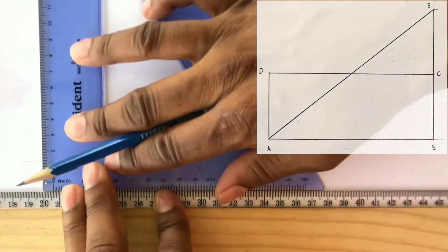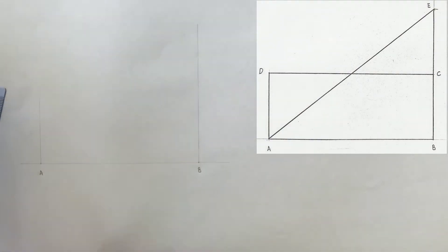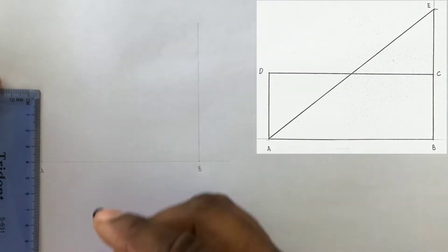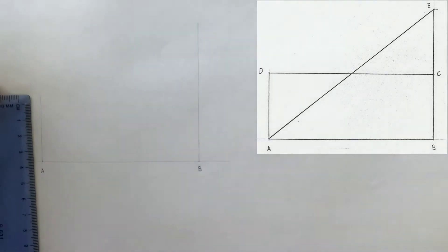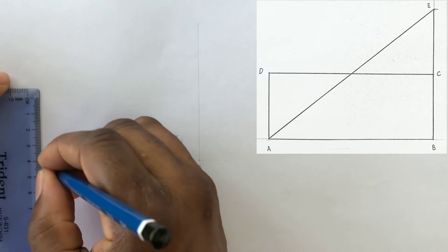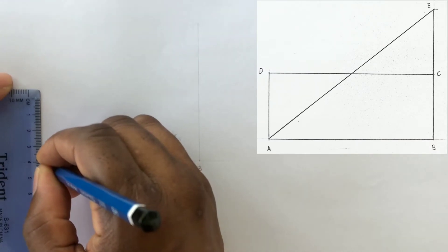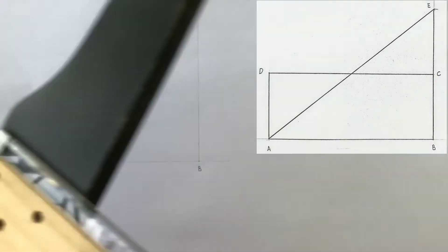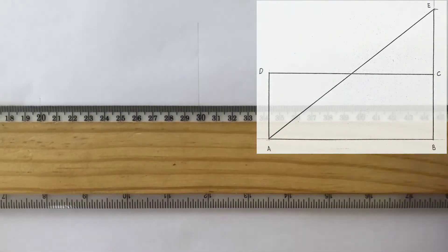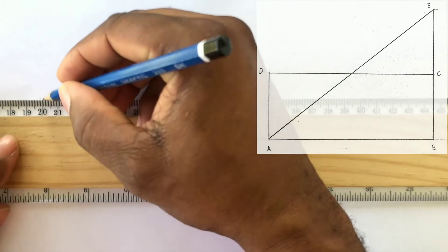From point A or from point B, use your set square to identify a point that is 40 millimeters away from any of these points. Now use your T-square to draw a horizontal line from the point you identified to the other perpendicular line.